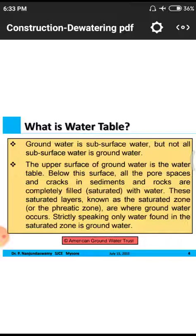Groundwater is used for agricultural purposes, industrial purposes, and in some apartments for drinking and sanitary purposes through bore wells. We have saturated zones where all voids are completely filled with water, and unsaturated zones. Strictly speaking, groundwater occurs only in the saturated zone.